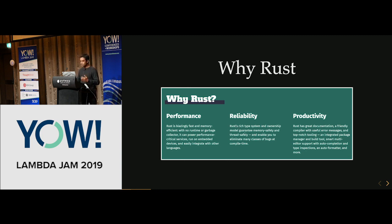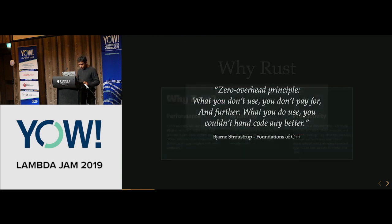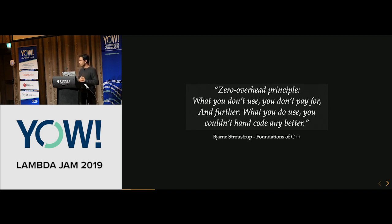Rust has a rich type system that addresses those problems. The unique thing about Rust is it provides reliability and safety without sacrificing productivity, so when you code in Rust it gives you a feeling of writing in a high-level language. It's based on the zero-cost abstractions from C++: what you don't use, you don't pay for, and if you do use something, you couldn't hand-code it any better. If you use high-level abstractions in most languages there's a performance cost, but that's not true in Rust.